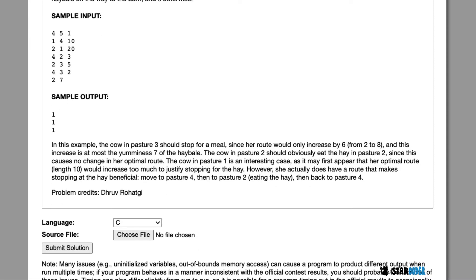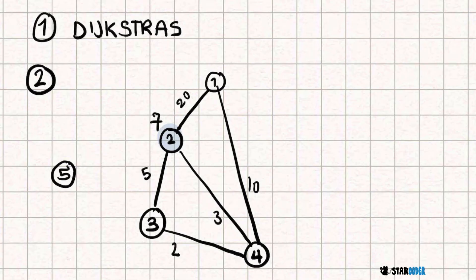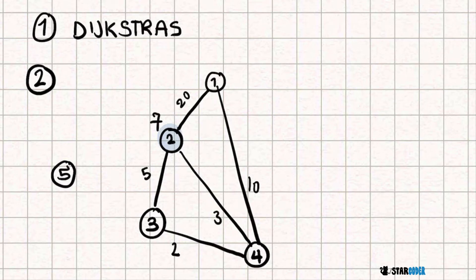Let's look at the algorithm for this question. You can most likely guess it's going to be a graph question because of the connections between the different pastures. We're going to create a graph with the pastures as the nodes and edges between them, and we're going to implement Dijkstra's algorithm — more specifically, we're going to run Dijkstra's algorithm twice.